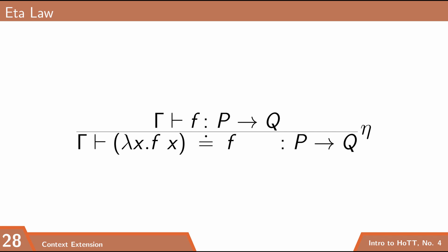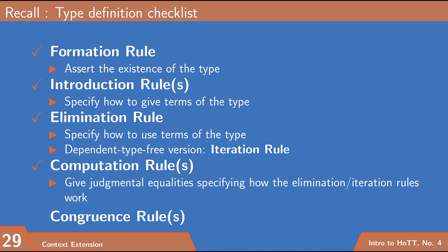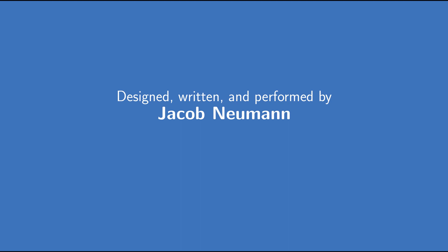Going back to our checklist, we have now supplied all the computation rules. Technically I also need congruence rules saying that judgmentally equal terms of type P arrow Q behave the same way, but I'll leave those for you to ponder. That's all I'll say about arrow types for now — we'll be seeing tons of arrow types throughout, as they really form the core of doing constructive logic in type theory.